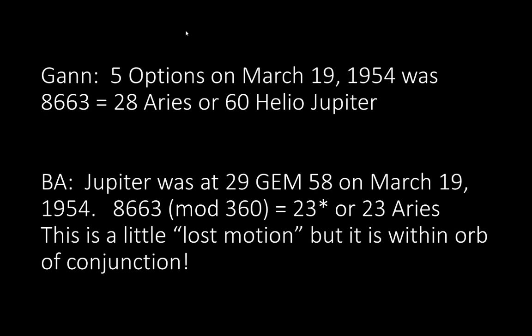GAN: five options on March 19, 1954 was $8,663, which is 28 Aries or 60° helio-Jupiter. What he means by that is the price at $8,663, which equaled 28 degrees, was in what's called a sextile aspect — 60 degrees to heliocentric Jupiter. Jupiter was at 29 Gemini 58 on March 19, 1954. $8,663 mod 360 equals 23 degrees or 23 Aries. This is a little lost motion, but it is within orb of conjunction. It's from about 29 degrees to 23 degrees — about six degrees — and that's within orb.